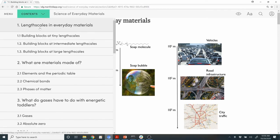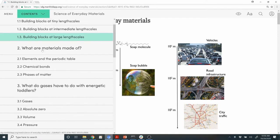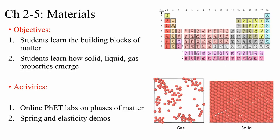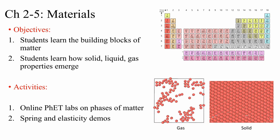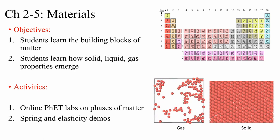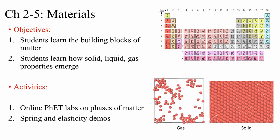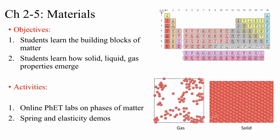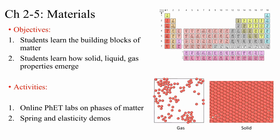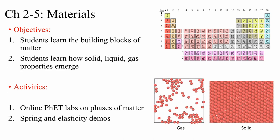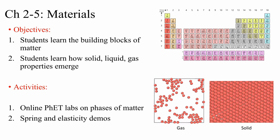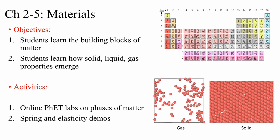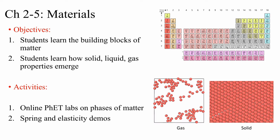On the left, you can see the contents, with chapter sections as well as subsections for individual chapters. Chapters two through five are about the emergence of typical material properties. Students learn about the building blocks of matter — the elements and how they are arranged in the periodic table. Next, students learn how elements form atoms, and atoms combine to form molecules. The interaction between molecules or atoms leads to the emergence of typical material properties such as gas, liquid, and solid properties. Students also have access to online activities as well as demonstrations of springs.